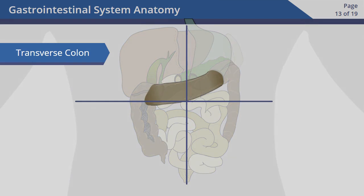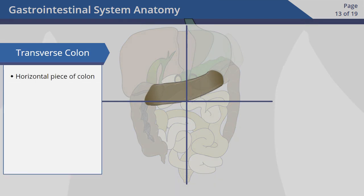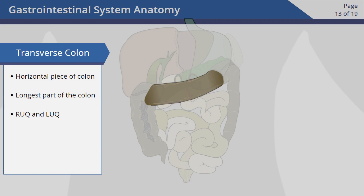The transverse colon is the horizontal piece of colon that transverses from right to left between the ascending and descending colon. This is the longest part of the colon, and it's located in both the right upper quadrant and the left upper quadrant. The transverse colon plays an important role in digestion by absorbing water, minerals, and nutrients from our food.